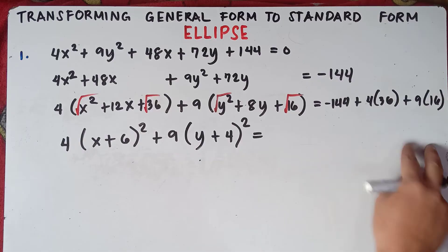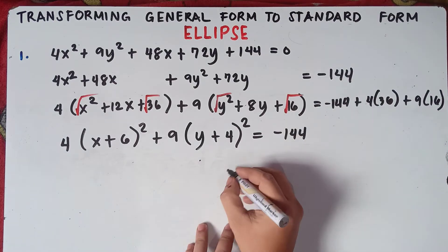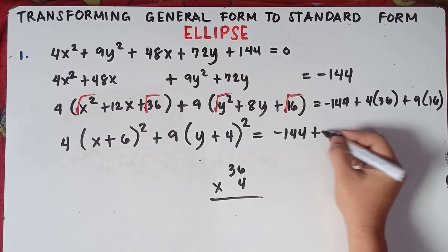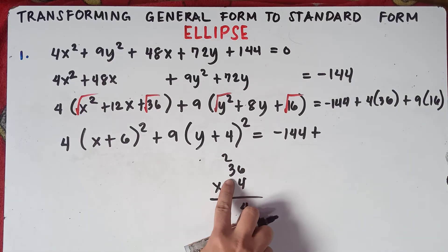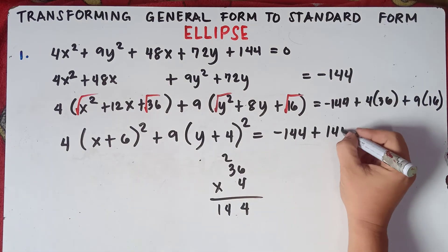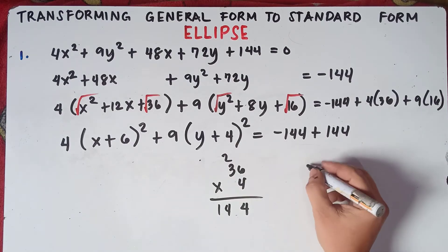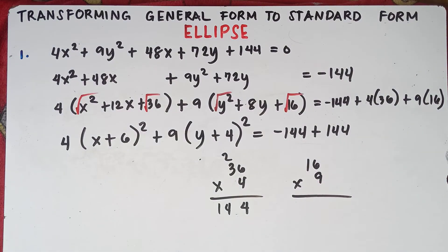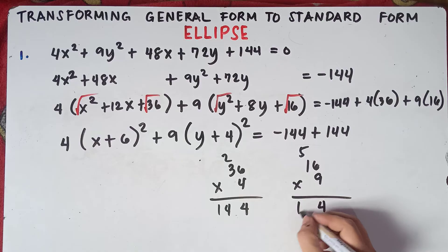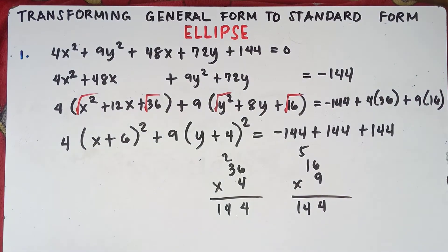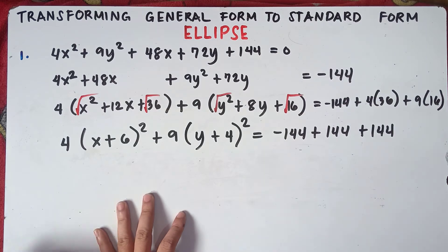Then equals — we simplify the right side. We multiply: plus 4 times 36 is plus 144. And negative 144 plus 144 cancels to 0. Then 16 times 9 is 144. So our equation becomes: 4 times (x + 6) squared plus 9 times (y + 4) squared equals 144.